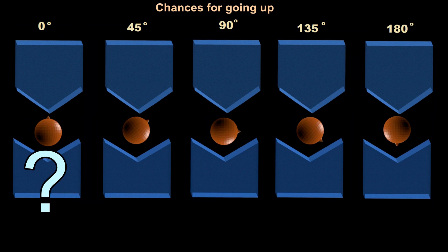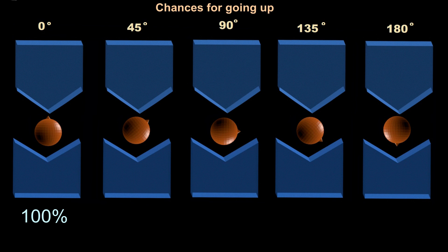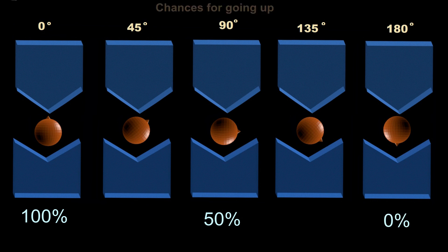What is the chance of going up when the spin is 0 degrees to the measuring orientation? That is 100% — it will always go up and 0% of the time go down. If the angle is 90 degrees, the chances are 50-50. If it is 180 degrees, there is no chance of going up — 100% of the time it will go down.